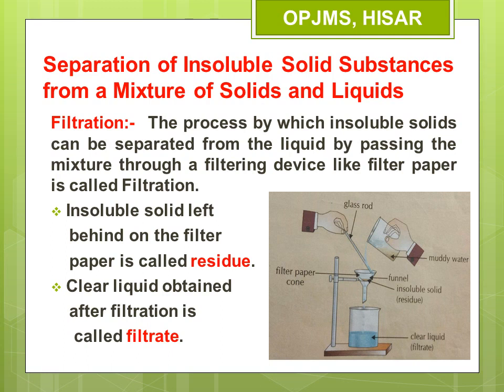Therefore, for this type of straining, a special type of strainer is used — this is known as filter paper. Filter paper is a piece of paper that has millions of tiny holes in it. The holes are so small that they cannot be seen with the naked eye; you can see them only through a microscope. When muddy water is passed through the filter paper, the mud particles, being bigger in size, cannot pass through.